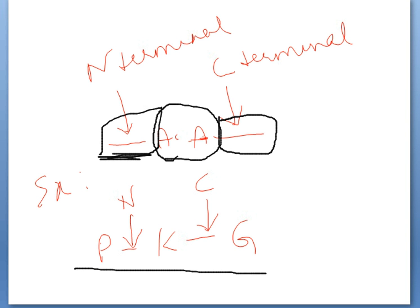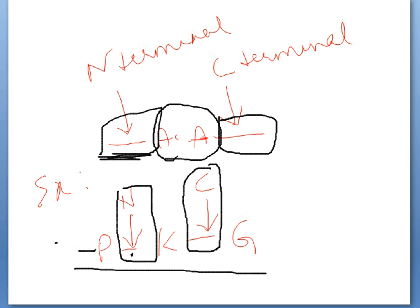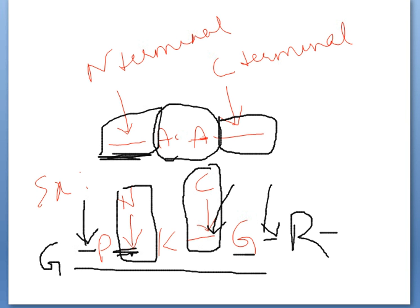The N-terminal peptide bond of lysine is this bond here, and this is its C-terminal peptide bond. If another amino acid such as glycine is added, this becomes the N-terminal bond of proline and this becomes its C-terminal bond. Similarly, if arginine is added, glycine's C-terminal and N-terminal bonds shift accordingly.